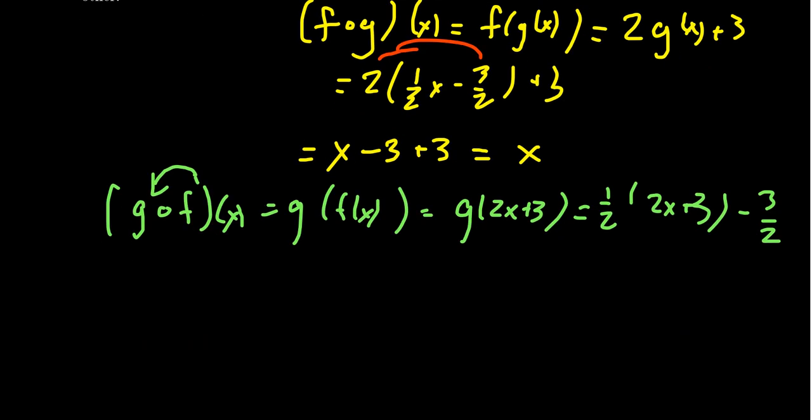And so simplifying, I'm going to distribute the 1 half in this situation like so. That would give us a, well, 1 half times 2, like we saw before, it's just a 1. So you just get an X. You get 1 half times 3, which is 3 halves. And then you're going to subtract 3 halves, which those are going to cancel out. And you're left again with just an X.